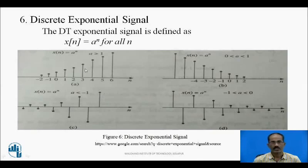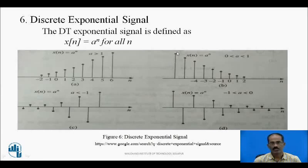Next is the discrete exponential signal, defined as x(n) = aⁿ for all n. When a > 1, the signal grows exponentially. When a is between 0 and 1, the samples decay exponentially. When a < -1, the samples alternate between positive and negative, growing in magnitude. When a is between -1 and 0, the samples decay while alternating between positive and negative.